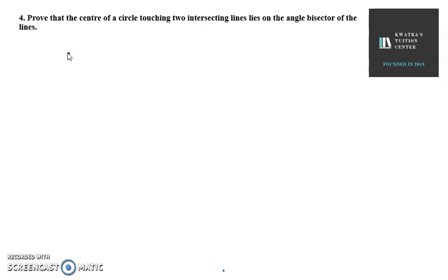So basically, what is going on here? We will try to understand it with the help of a diagram. So basically, we have two intersecting lines in the form of tangents. And here,